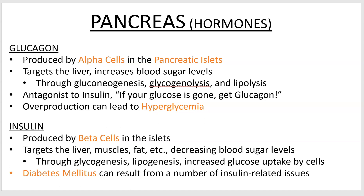Insulin, which you've all heard of, is produced by beta cells. You don't have to recognize alpha and beta cells in an image — just know what their jobs are. Insulin targets a lot more tissues. Two new terms to know: glycogenesis, really 'glycogen genesis,' is the making of glycogen out of sugar, which removes sugar from the blood and lowers blood sugar. Lipogenesis is making fat — you can turn sugar into fat pretty easily.